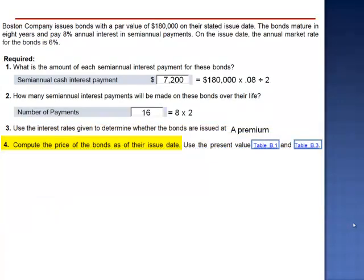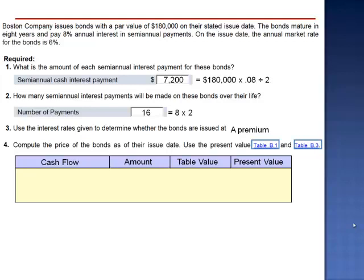Requirement 4. Compute the price of the bonds as of their issue date, and we're to use the present value table. The repayment schedule, the cash flow promised by these bonds, consists of two components.